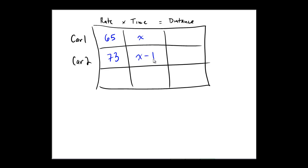Now, thanks to the equation lurking in the background, rate times time: 65 times x yields the distance Car 1 would have traveled. And 73 times x minus 1, which is 73x minus 73 after the distributive property, yields the amount of distance Car 2 would have traveled. These two expressions are going to be useful for putting the problem together.